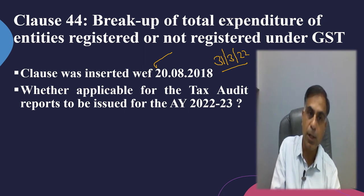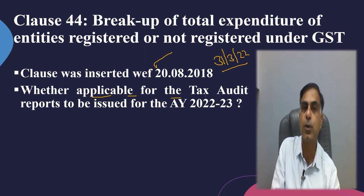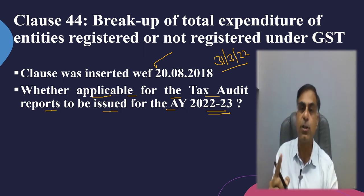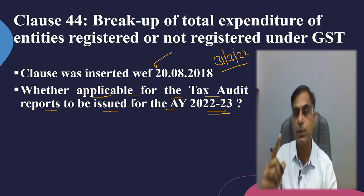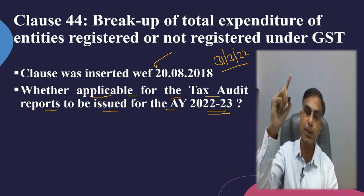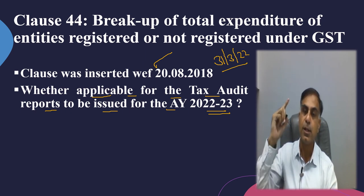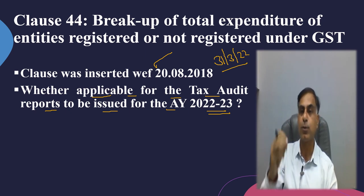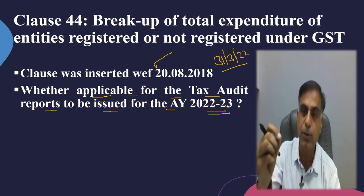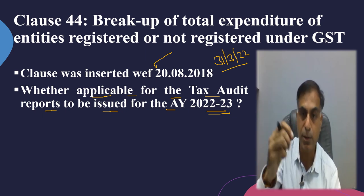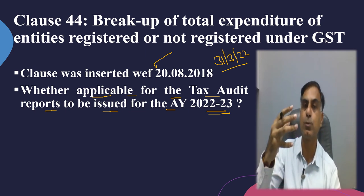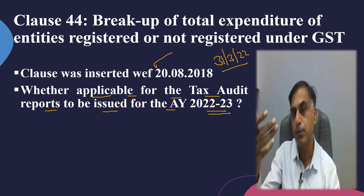A very important question arose before the profession: whether Clause 44 is applicable for Tax Audit reports to be issued for Assessment Year 22-23 or not. In my opinion, any Tax Audit report going to be issued on and after 1st April 2022 — and for AY 22-23 all Tax Audit reports will be issued effective 1st April 2022 — Clause 44 is 100% applicable for all Tax Audit reports to be uploaded for AY 22-23, because there is no further postponement after 31st March 2022.